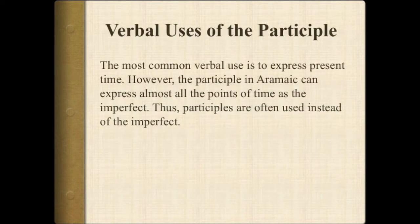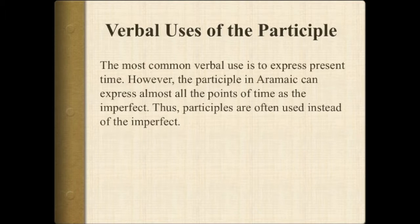Now, the participle is most commonly used to express present time. However, the participle in Aramaic can express almost all the points of time as the imperfect, and thus participles are often used instead of the imperfect, which seems a little bit confusing at times because there is not necessarily a pronoun or indication of the person involved.